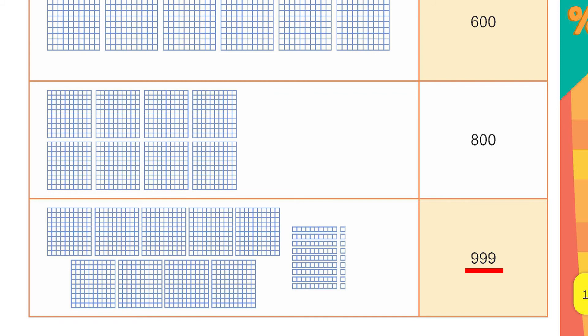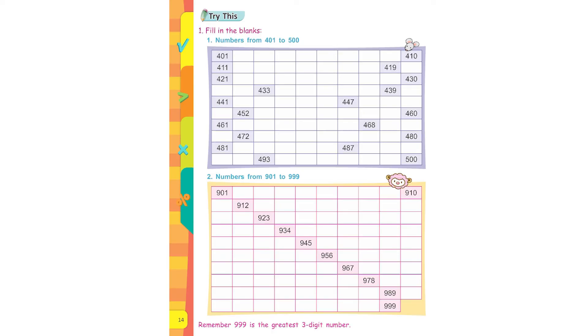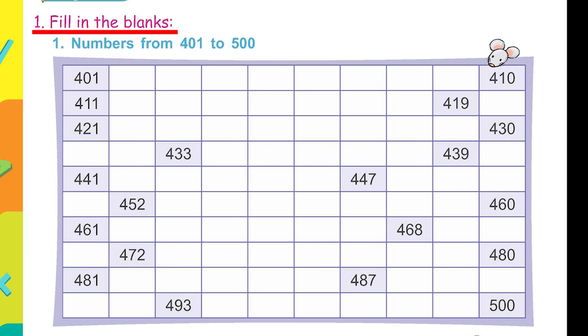This is the largest, the biggest three digit number. Okay. Move on to page 14. Fill in the blanks, writing numbers from four hundred and one to five hundred. Now some of the numbers are given. Rest you have to write yourself.